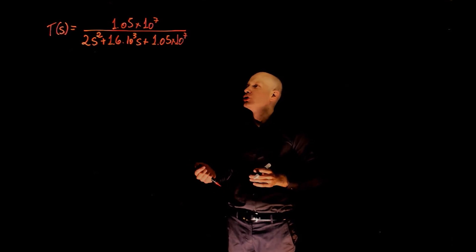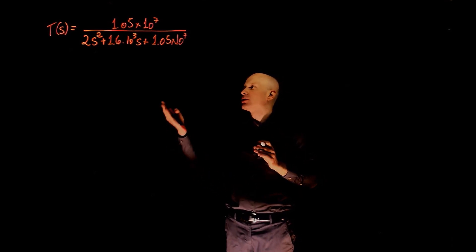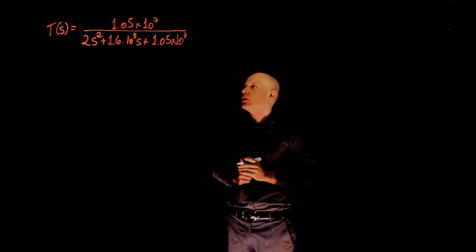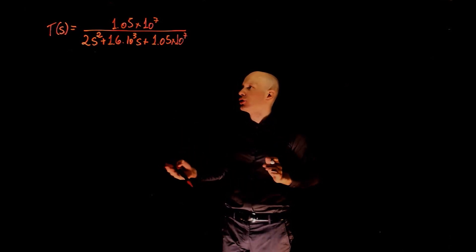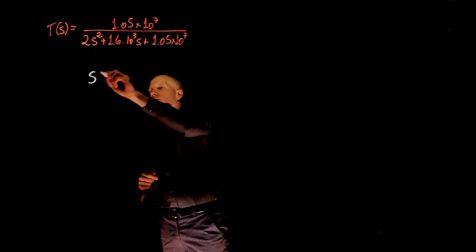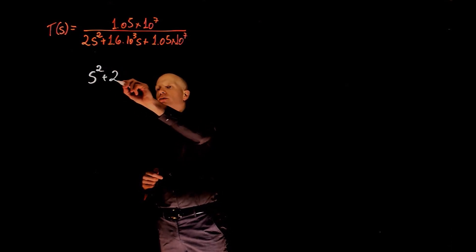In this example we have a transfer function and you're looking at writing this transfer function in the standard form. The standard form for a second order transfer function is written in the form of s squared plus 2 zeta